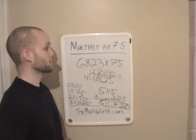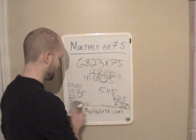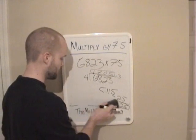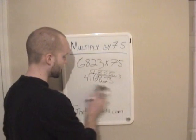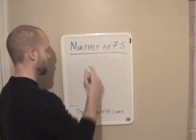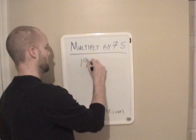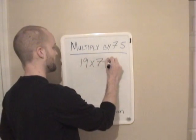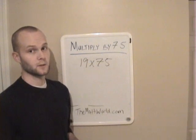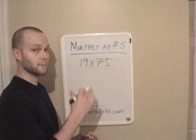And this is the method that just pertains to 75. Now if you're familiar with the trick how to multiply by 25, you can use that also. And we'll take a look at that right now. Let's say 19 times 75. We're going to treat this exactly like we would if we're multiplying by 25.